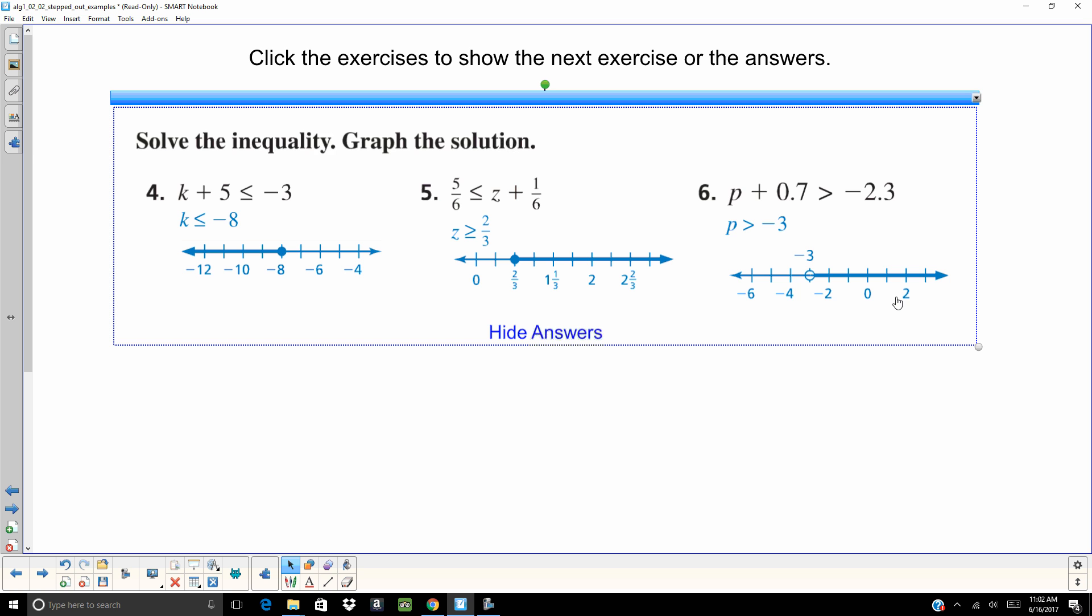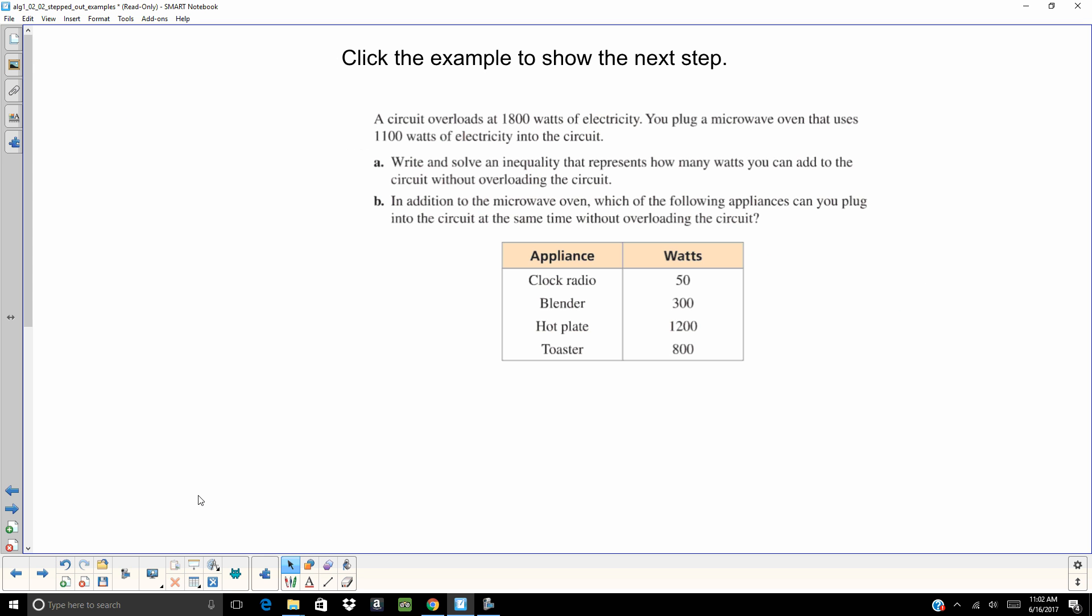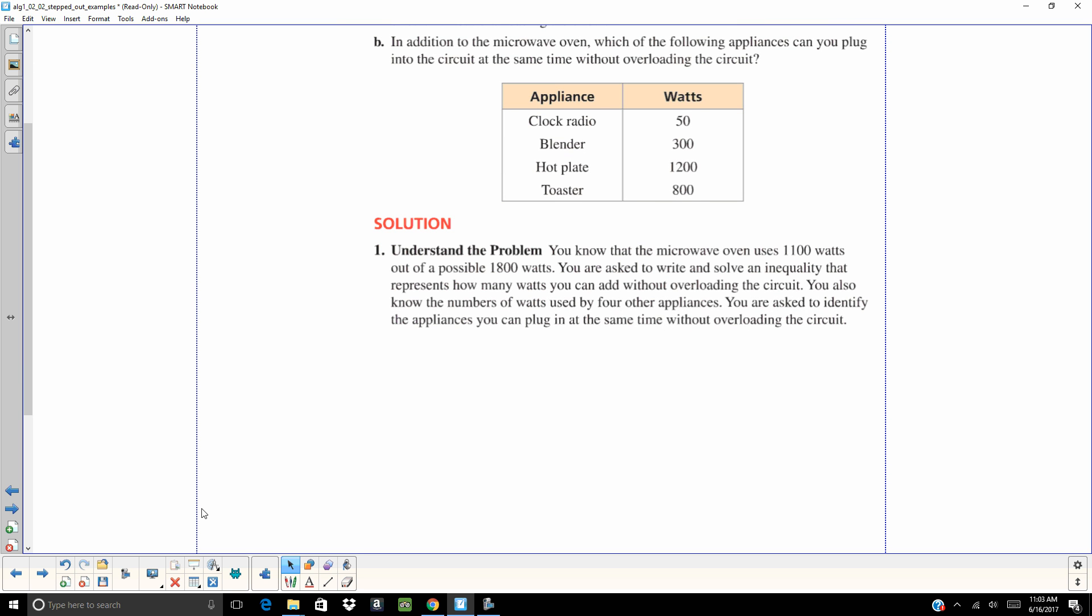All right, here we have a word problem. A circuit overloads at 1800 watts of electricity. You plug a microwave oven that uses 1100 watts. We want to write and solve an inequality that represents how many watts you can add to the circuit without overloading the circuit. Then we have a part two: in addition to the microwave, which of the following circuits can you plug in, or which are the appliances can you plug into that circuit? So kind of read that problem, figure out what's important. The main thing is you've got 1100 being used, you can use a maximum of 1800.